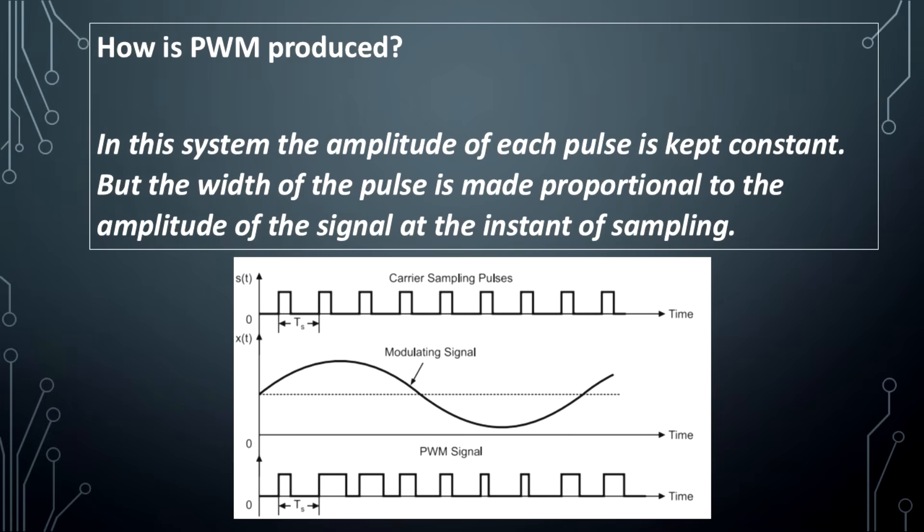How is PWM produced? In this system, the amplitude of each pulse is kept constant. But the width of the pulse is made proportional to the amplitude of the signal at the instant of sampling. A figure is shown below.